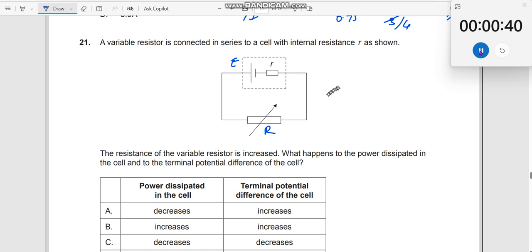So first what we will do is let us find out what is the current. Current I should be equal to E divided by R plus r. Right. Because it is a series circuit.